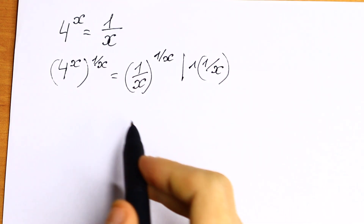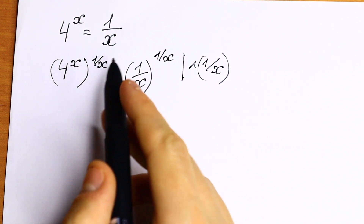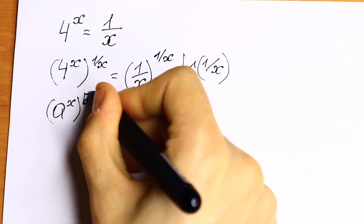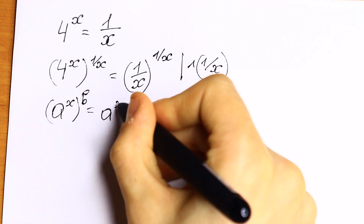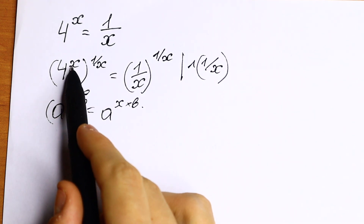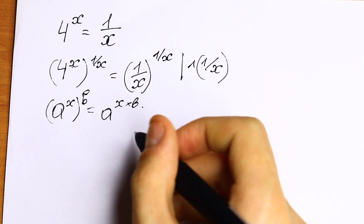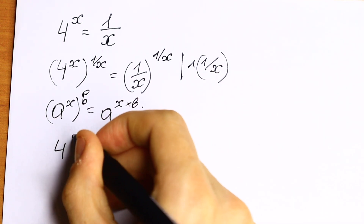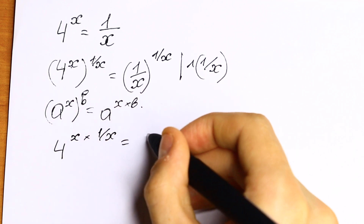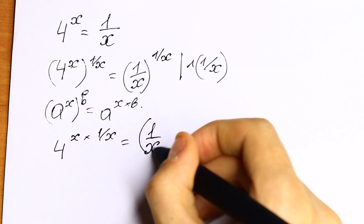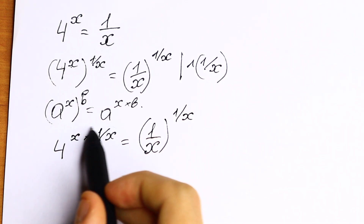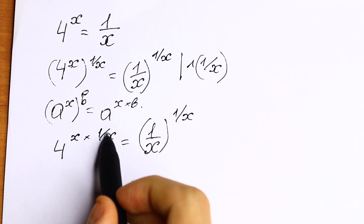What are we going to do next? Take a look — we have a situation like a to the power x raised to the power b, so we can multiply: a to the power x times b. We need to multiply x times 1 over x. On the left we will have 4 to the power x times 1 over x, equal to 1 over x to the power 1 over x. And if you multiply x times 1 over x, we get 1, so we will have only 4.